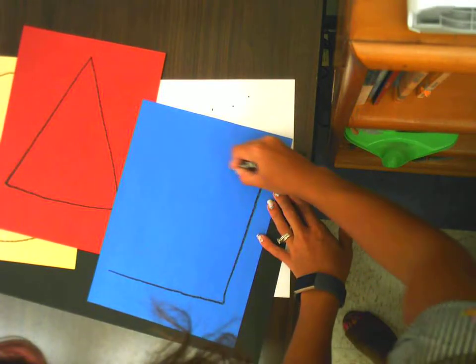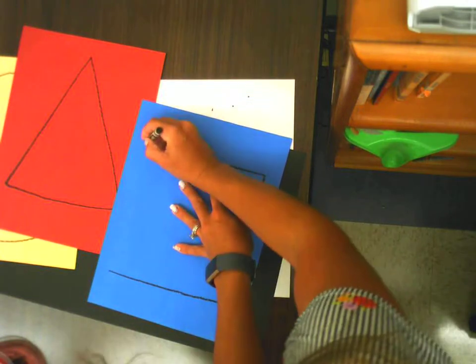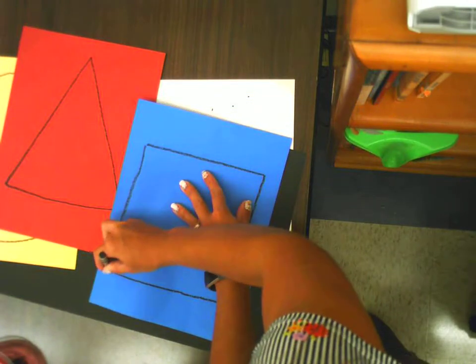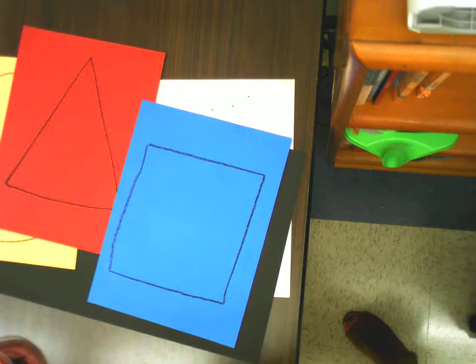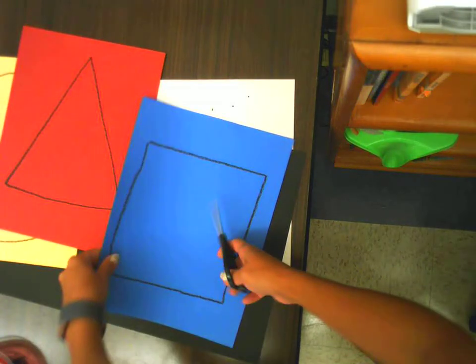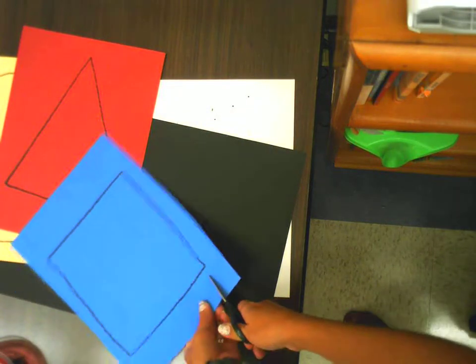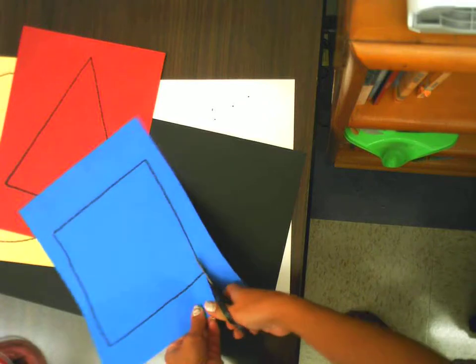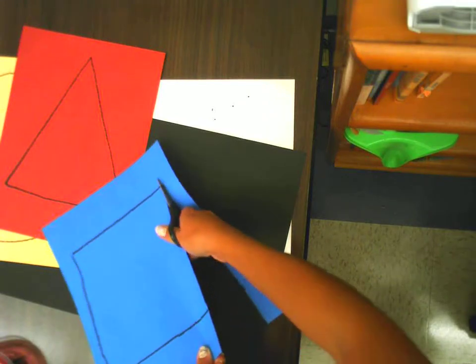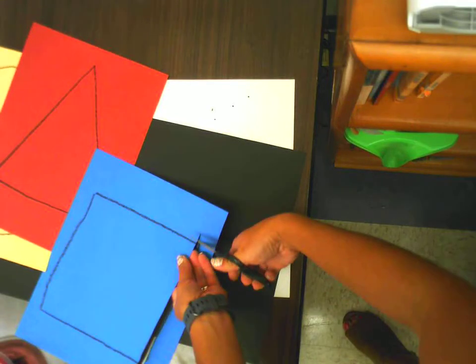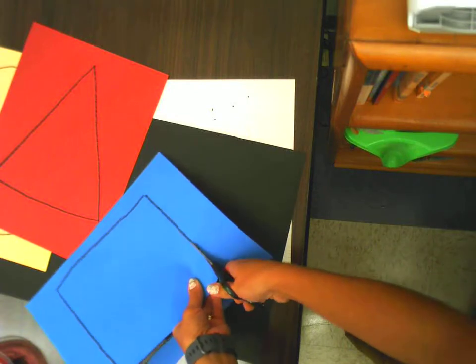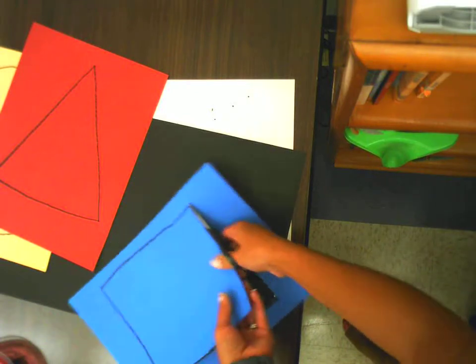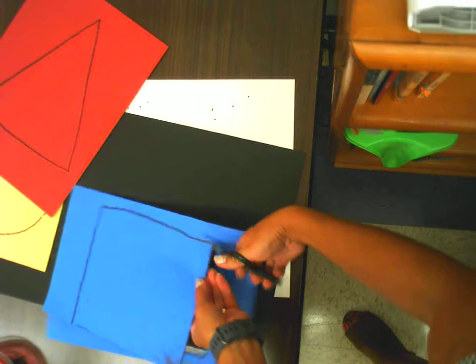You now need to cut these shapes out on the lines. Make sure that we save all our scrap paper because we will be using the scrap paper for the feet and the noses.